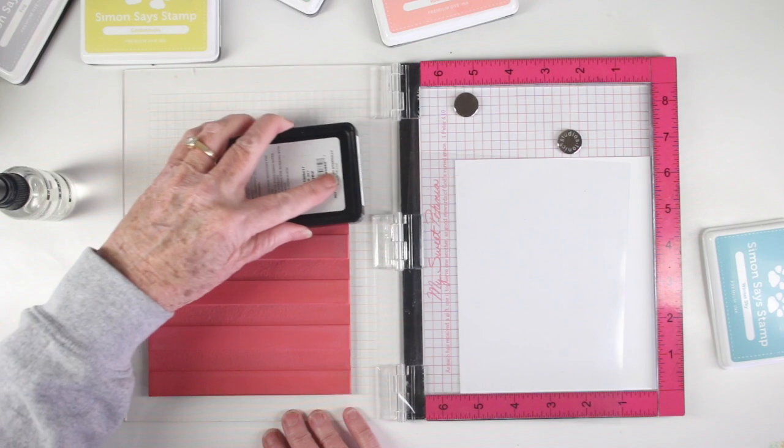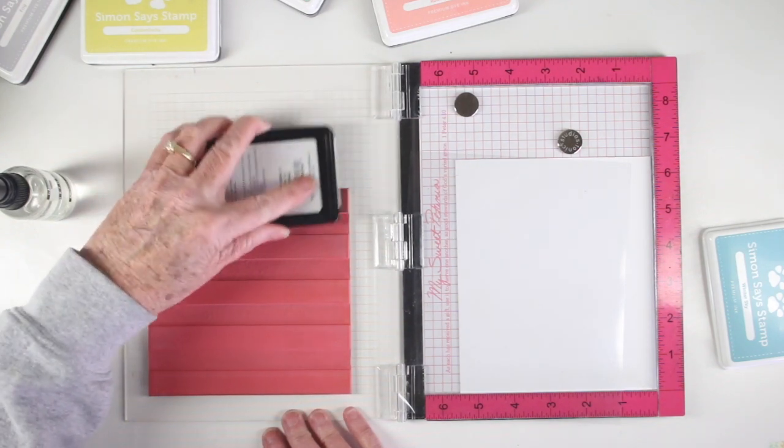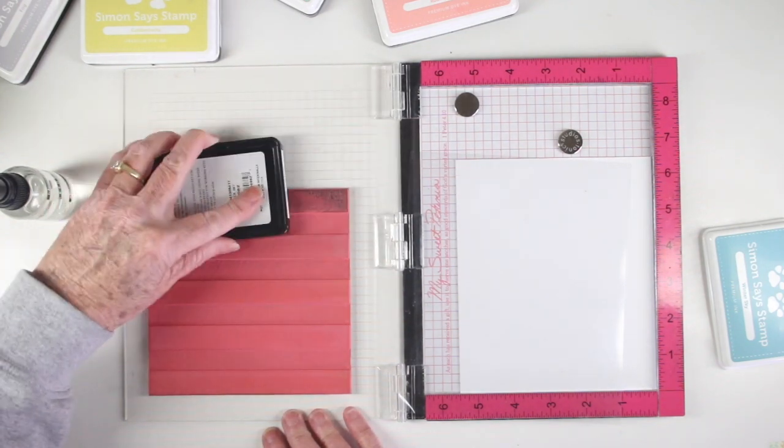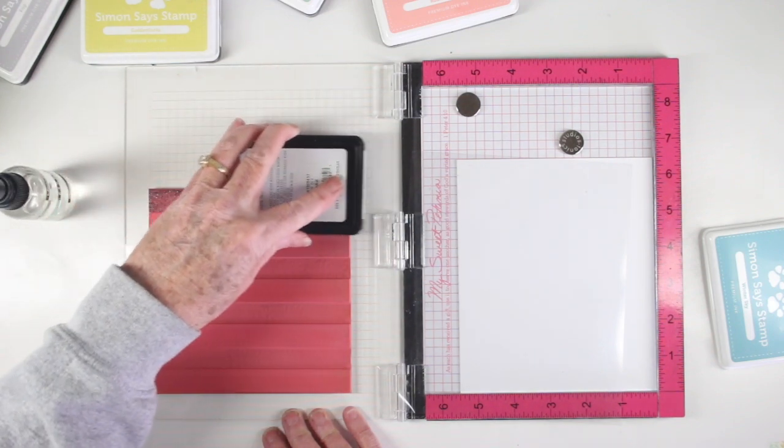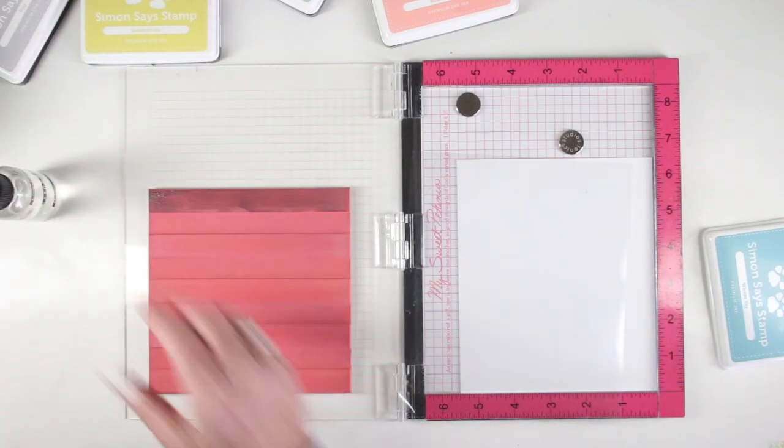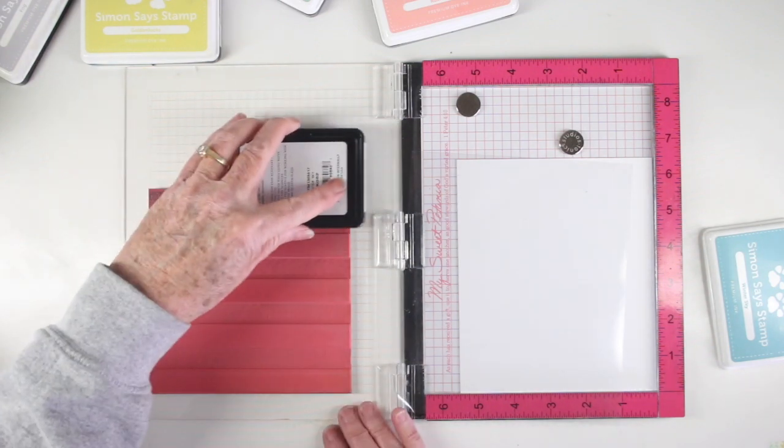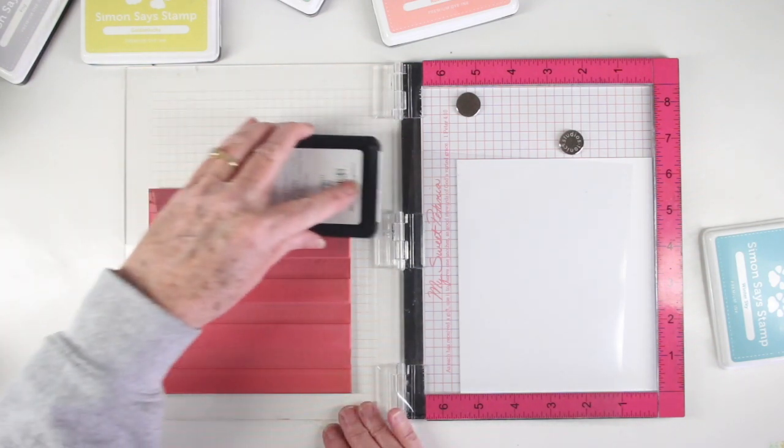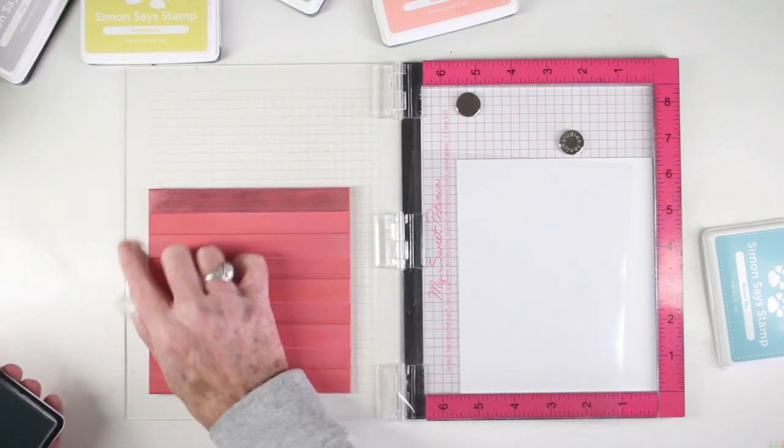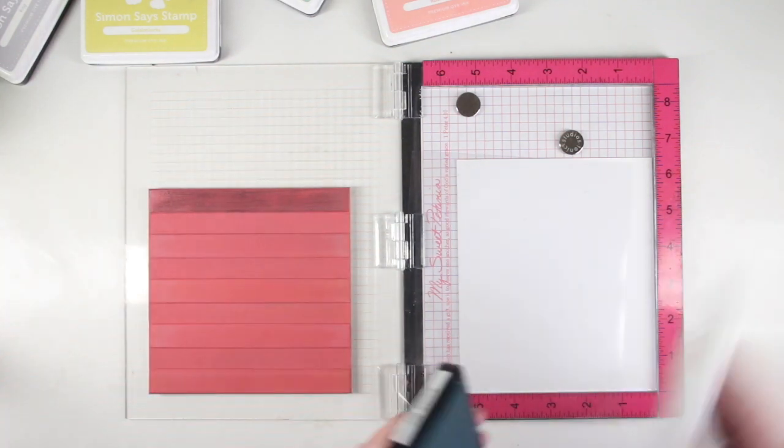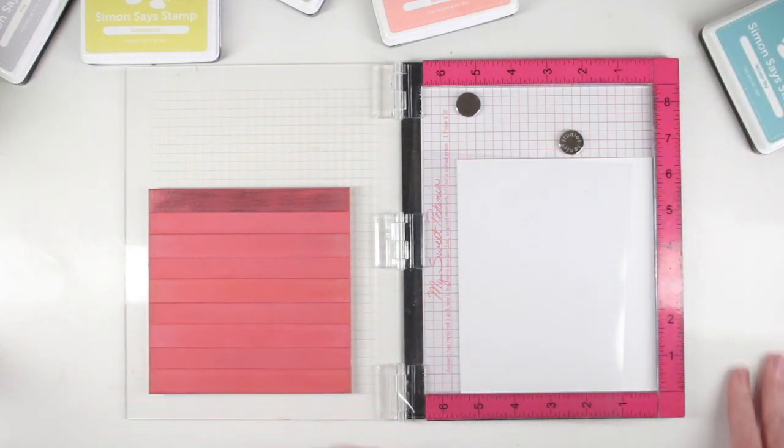I'm starting with my first color which is winter sky and I'm just tapping that on to the top portion. I'll be tapping the ink on first and once I have that covered I'll swipe along that stripe to get a nice swipe look. However your ink looks on the stamp it will also look on your paper, so I thought this would be a fun way to use the ink.